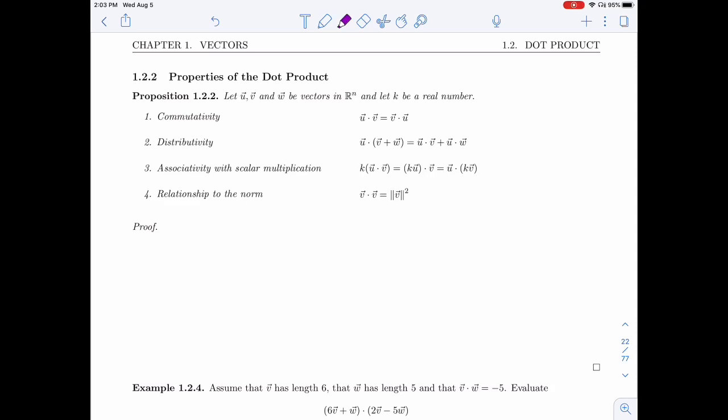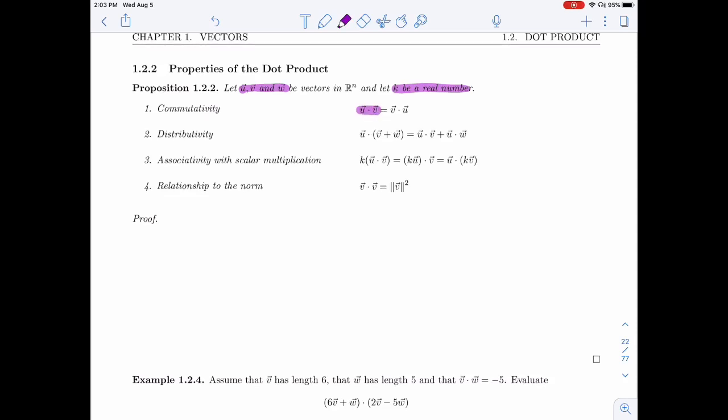All right, so if we have three vectors in R^n, the same dimension, u, v, and w, and I'm going to take k to be any real number, first thing I know is the dot product is commutative. So whether you take u dot v or v dot u, you get the same result.